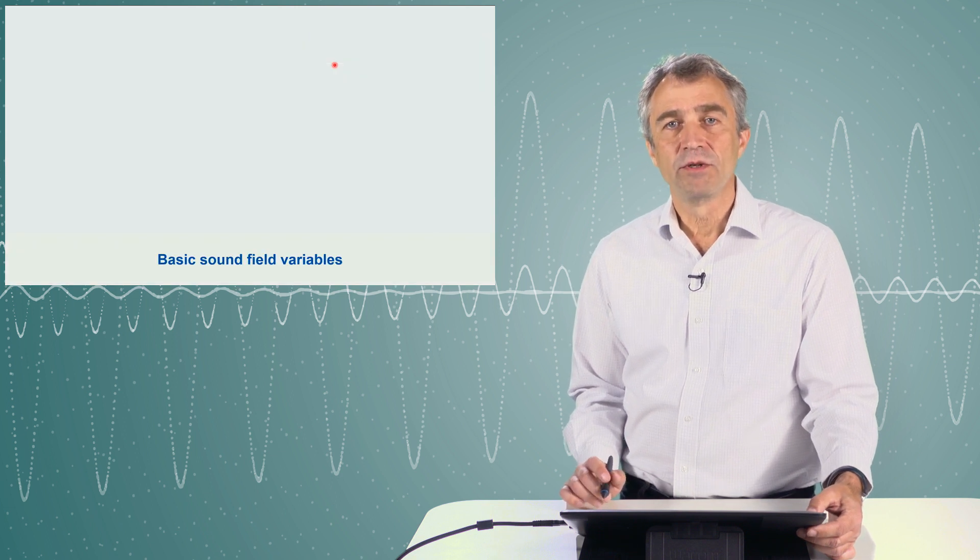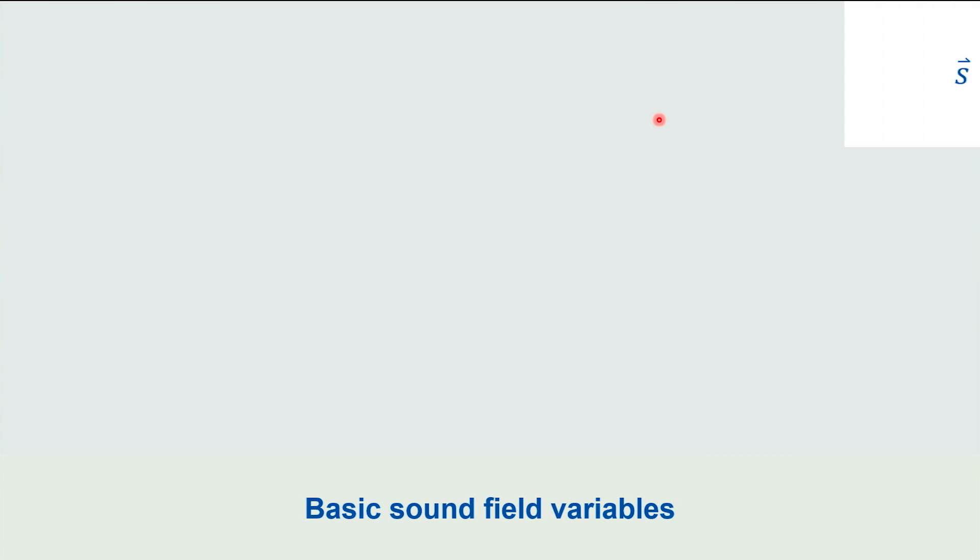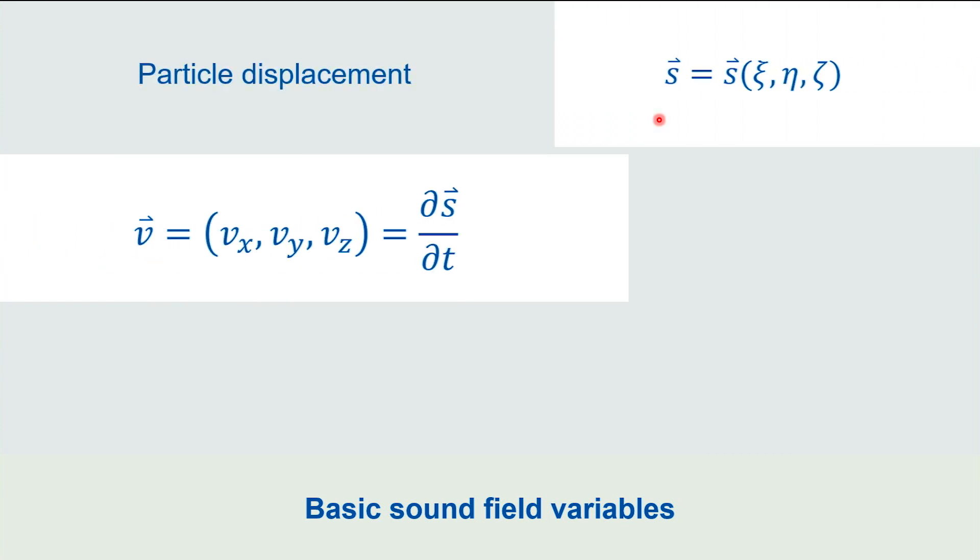The basic sound field variables we will use are the particle displacement, the temporal derivative of the particle displacement, we call it particle velocity, and the resulting pressure change, we call it sound pressure.